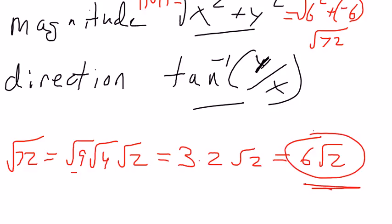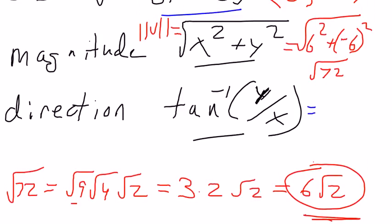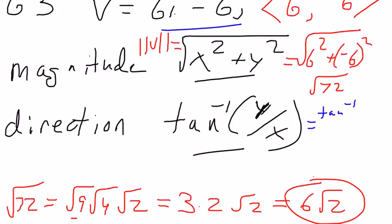The direction, it's going to be the inverse tangent of y over x. My y value is negative 6. My x value is 6. So the inverse tangent to that, if I do that on my calculator, is negative 45 degrees.